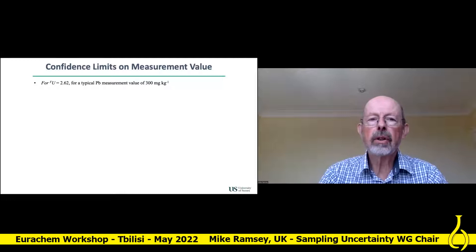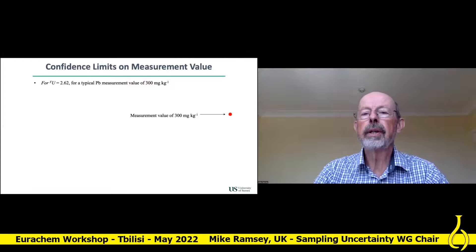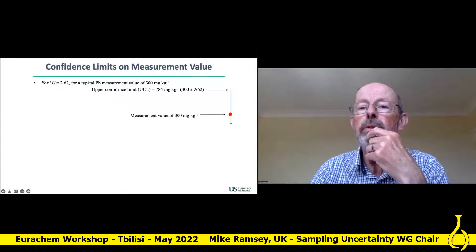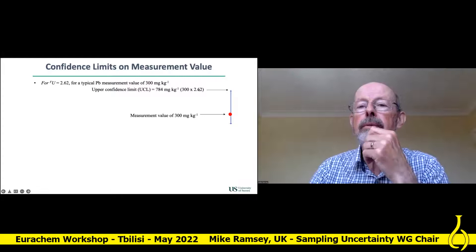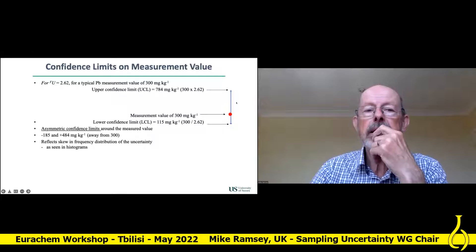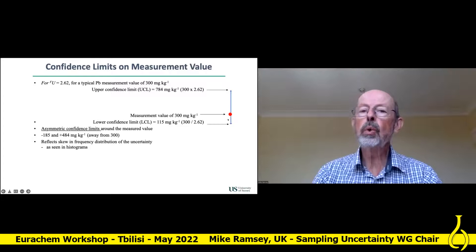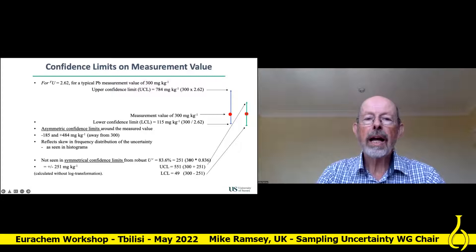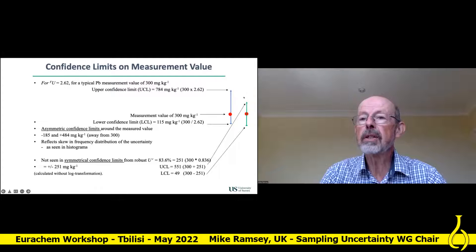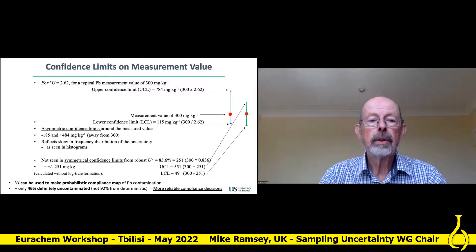What are the implications of an uncertainty factor of 2.62? For a typical measurement value of 300, you estimate the confidence interval not by plus or minus but by times and division. The upper confidence limit is 300 × 2.62, and the lower confidence limit is 300 ÷ 2.62 — and you can see this is asymmetric: basically plus 500 one way and minus 200 the other. It reflects the skew in the log-normal distribution. If you had just used the robust estimate of uncertainty, you'd get a symmetrical confidence interval but ignore the large area up here where the true value could be, so you really underestimate the uncertainty in a key area.